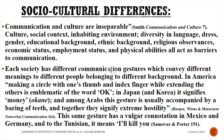Each society has different communication gestures which convey different meanings to people belonging to different backgrounds. For example, in America making a circle with one's thumb and index finger while extending the others is emblematic of the word 'okay.' In Japan and Korea it signifies money, and among Arabs this gesture is usually accompanied by a baring of teeth — together they signify extreme hostility. This same gesture has a vulgar connotation in Mexico and Germany, and to the Tunisians it means 'I'll kill you.'